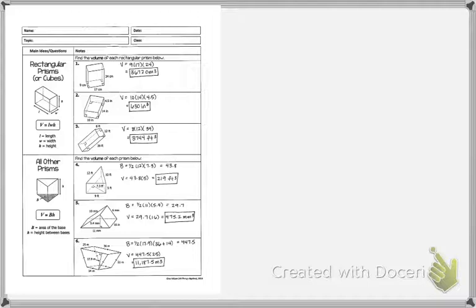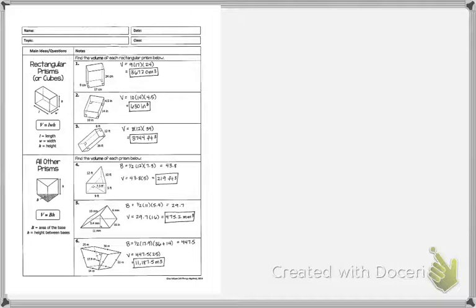Good morning! We're switching from surface area to volume. For surface area, it's like wrapping a gift — how much wrapping paper do we need around a figure. Volume is different: it's how much you can put inside it. Just like surface area, it requires you to focus on the dimensions needed for each formula.